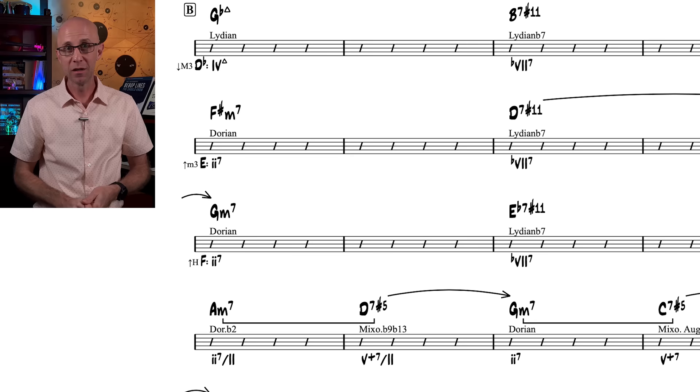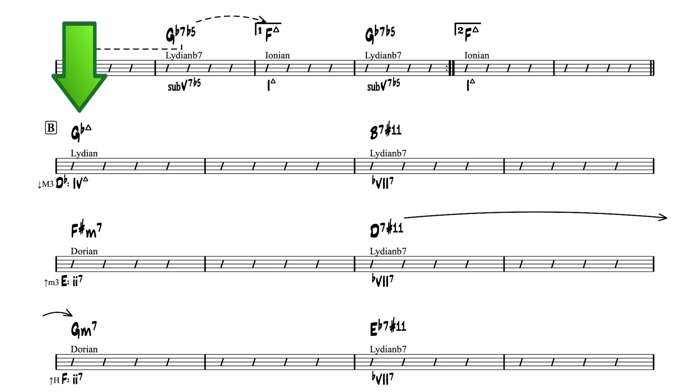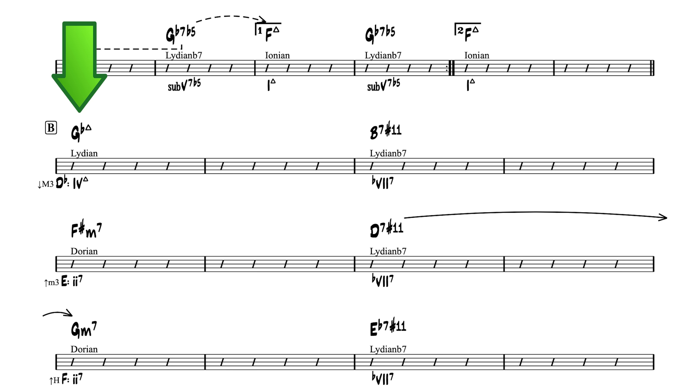Once we understand this interpretation of the harmony, we can see how creative and tricky Jobim is at reharmonization. The Gbmaj7 chord throws everyone off at first because it seems like a modulation a half step up, but in reality it's the IV chord in the key of Db and is actually functioning as a Lydian chord. So the actual modulation is from Fmaj to Dbmaj, a major third down.